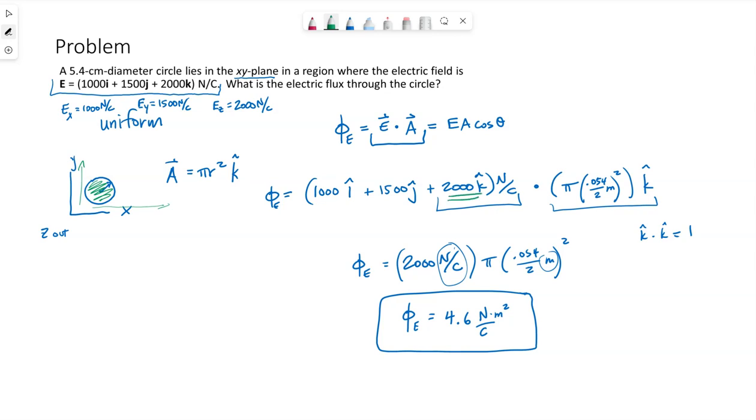It's only the z component that can physically pass through this circle, which is what this dot product gives us. But had you reasoned that out to begin with, you could have totally said this electric flux is simply that z component of the electric field times the area.